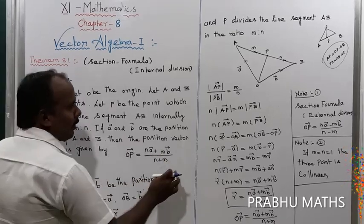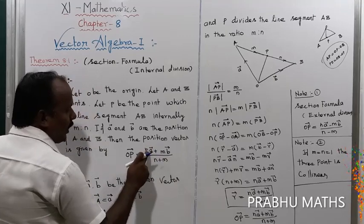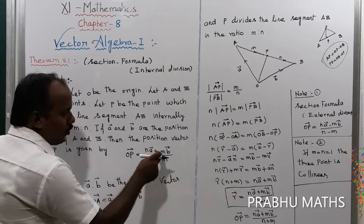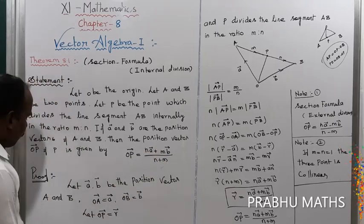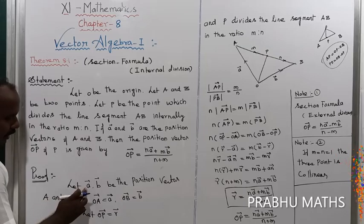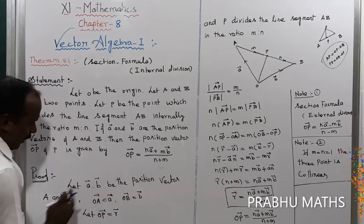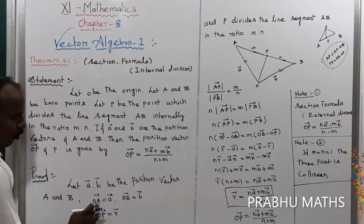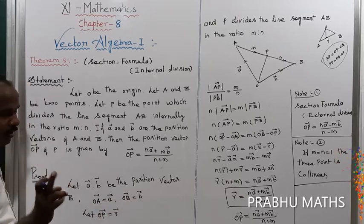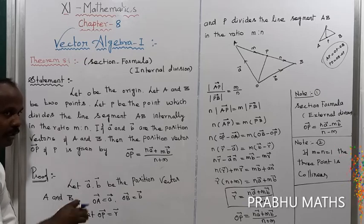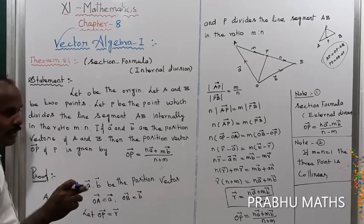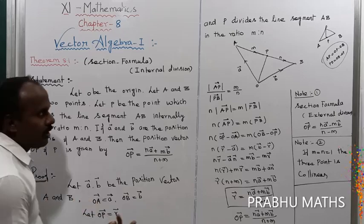This is the midpoint formula. When M equals N equals 1, the formula gives X1 plus X2 divided by 2. Now let us prove this. Let A and B be the position vectors of points A and B, so OA equals vector A and OB equals vector B. P divides the line segment AB in the ratio M to N.